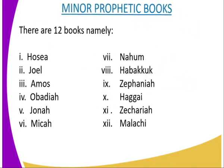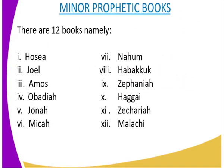Under the minor prophetic books, there are twelve in number. We have Hosea, Joel, Amos, Obadiah, Jonah, Micah, Nahum, Habakkuk, Zephaniah, Haggai, Zechariah, and Malachi. These are called the minor prophetic books, and together they complete the prophetic books of the Old Testament.